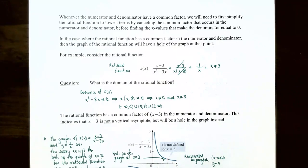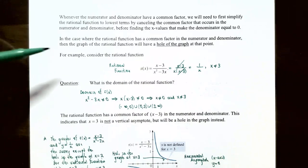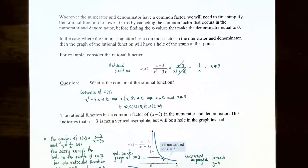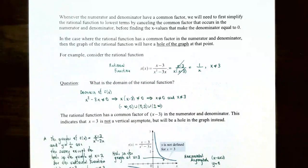When a rational function has a common factor in both numerator and denominator, the graph will have a hole at the x value that makes both numerator and denominator zero. For example, consider s(x) equals (x minus 3) divided by (x squared minus 3x). Factoring the denominator, x squared minus 3x equals x times (x minus 3), so x minus 3 is a common factor in both numerator and denominator. Those can be canceled, leaving the rational function 1 divided by x.